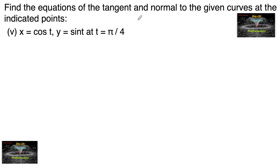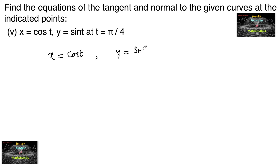Find the equations of the tangent and normal to the given curve at the indicated point. x is equal to cos t and y is equal to sin t at t is equal to pi by 4. Both the equations are in parametric form whose parameter is t.